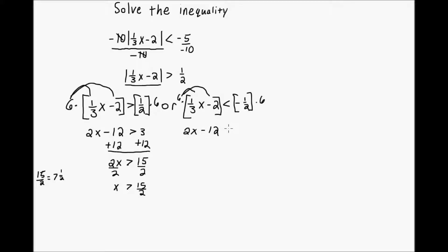So this is 2x minus 12 is less than negative 1 half times 6. Well, this time it's going to be negative 3 because of this negative sign here. I have 6 times negative 1 half, positive times negative is negative. And I just do 6 divided by 2.